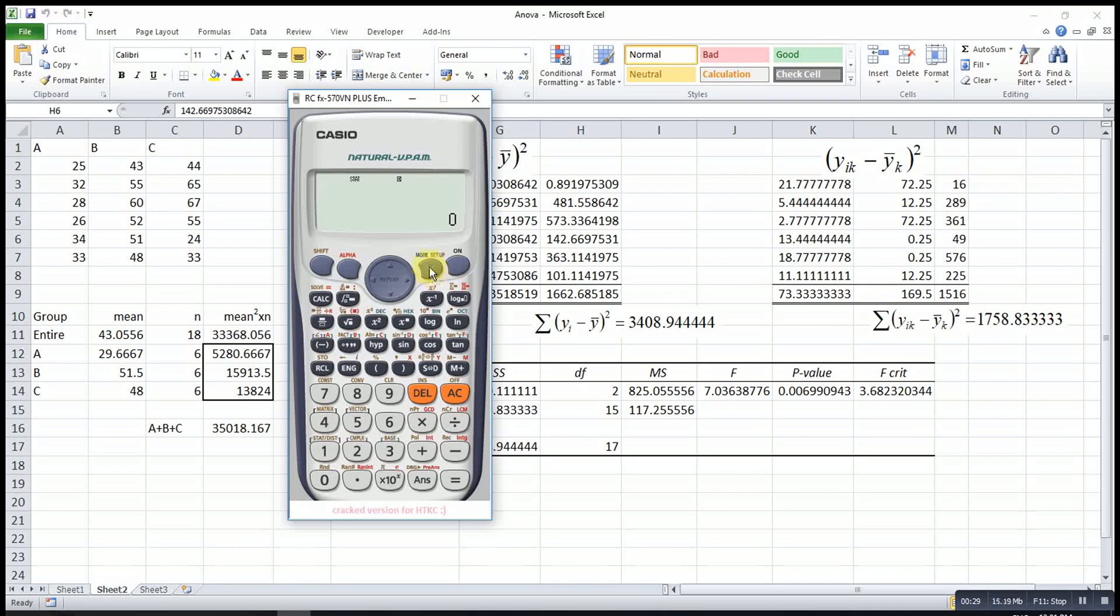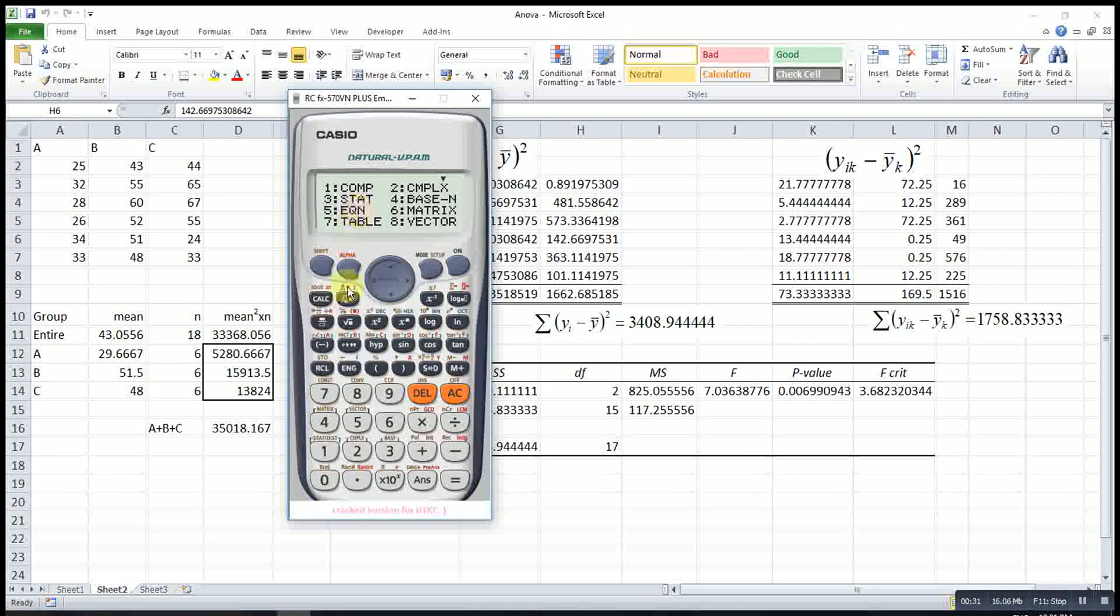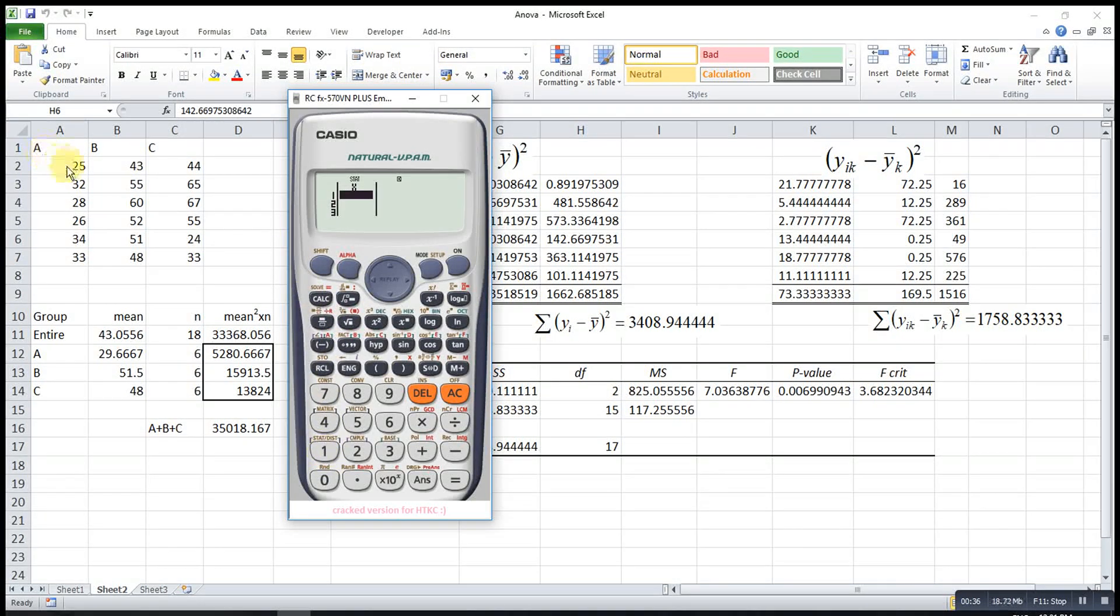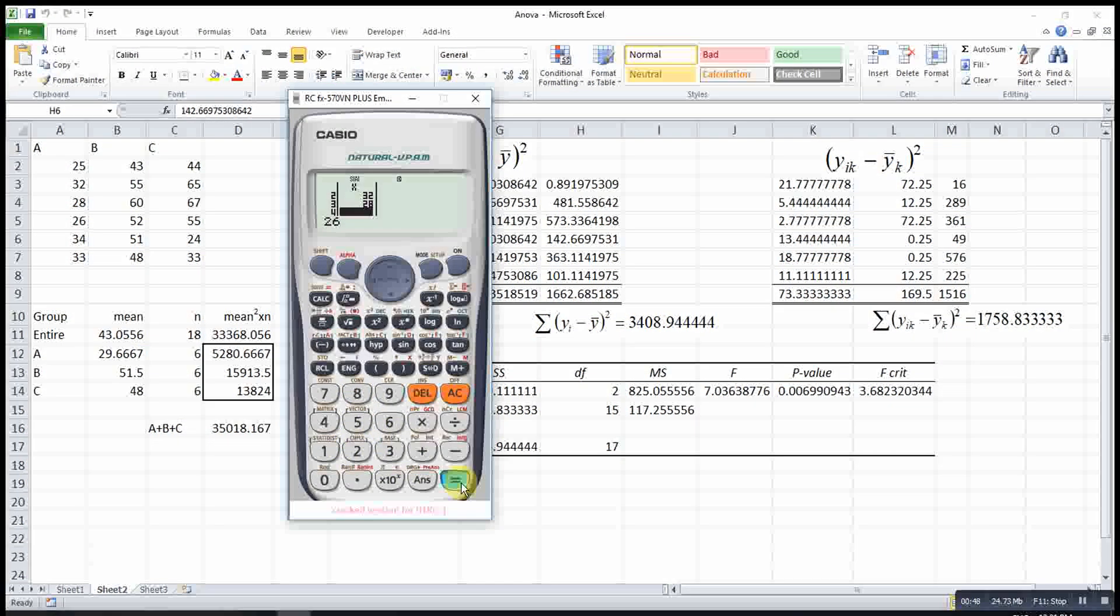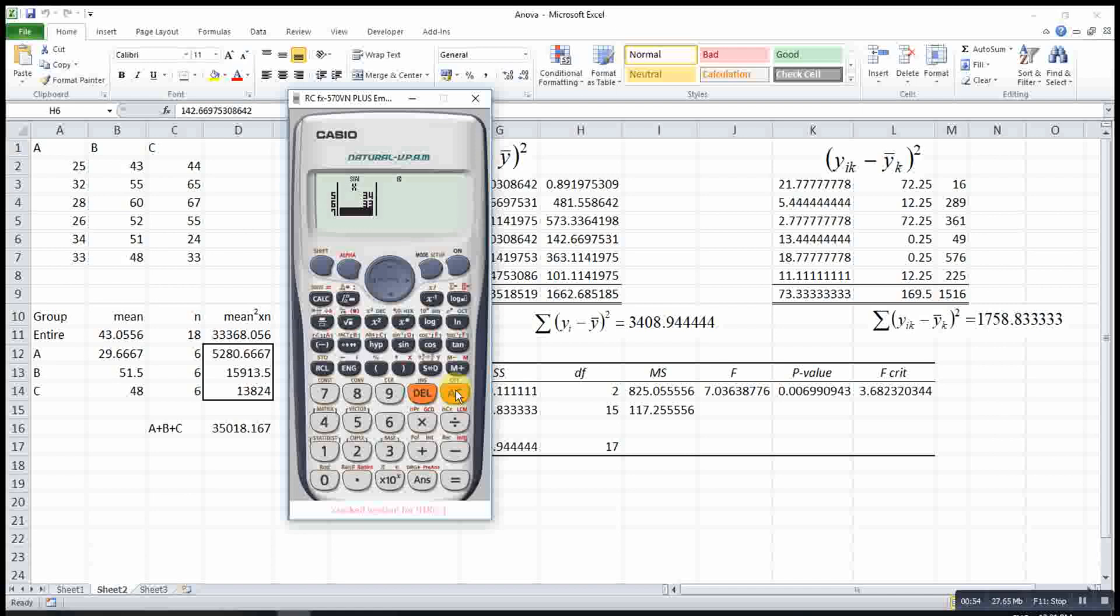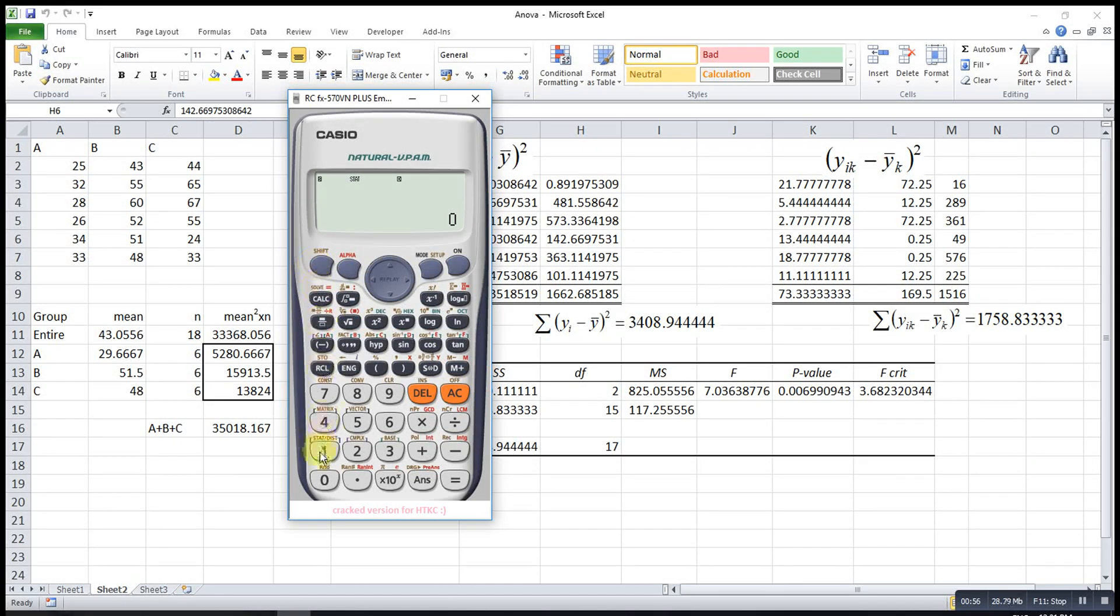Let's try. We press mode, then look for statistic 3, then one variable 1. Then we enter the data: 25 equals, 32 equals, 28 equals, 26 equals, 34 equals, 33 equals. After that, skip.